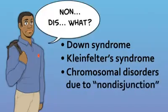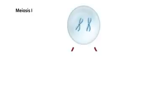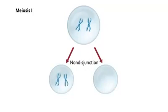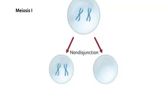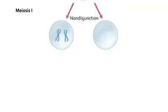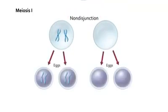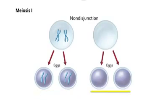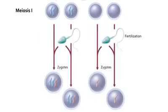When non-disjunction occurs during meiosis 1, replicated homologous chromosomes do not separate correctly. One daughter cell retains both replicated chromosomes, while the other daughter cell lacks that chromosome. When a haploid sperm fertilizes an egg with an extra chromosome, trisomy occurs.